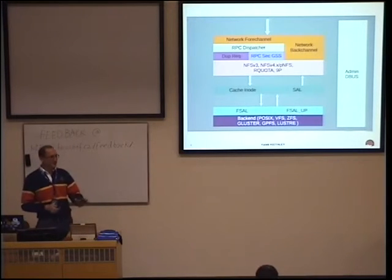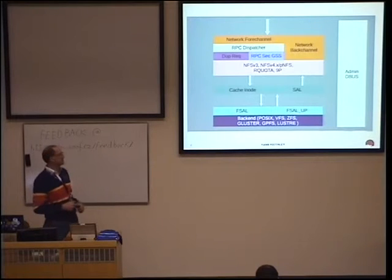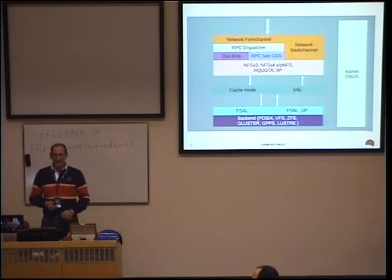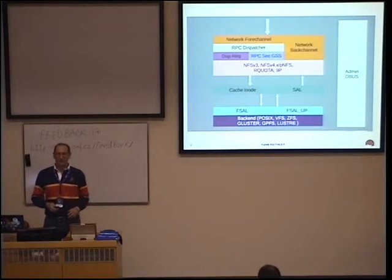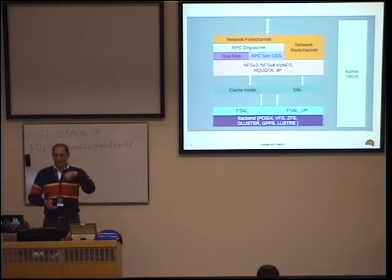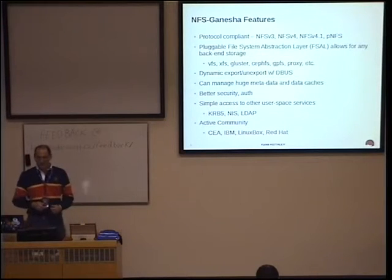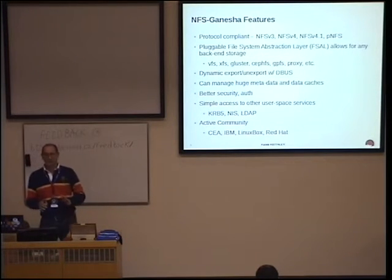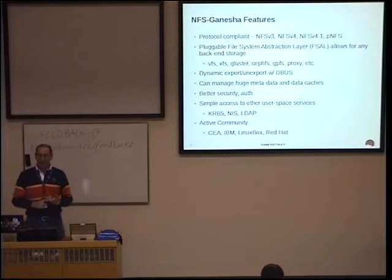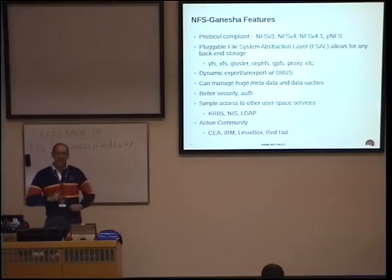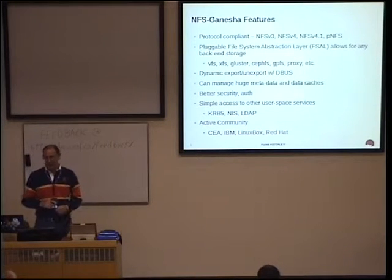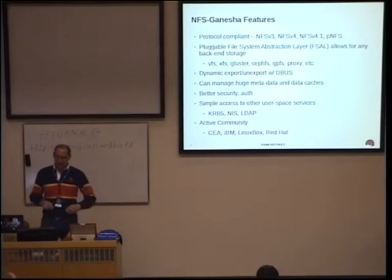Gluster is the closest to a file system because we have a fuse bridge that talks through the kernel VFS to fuse, and then we turn it into a wire protocol to talk to the Gluster servers — so we fake it. Features that are in Ganesha: we're protocol compliant, trying to be precisely protocol compliant with the published RFCs. We have NFS v3, NFS v4, NFS v4.1, and even PNFS. The things in 4.2 are coming soon but not there yet.